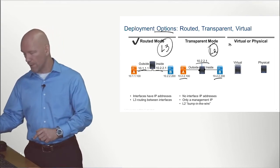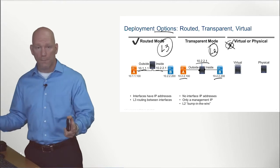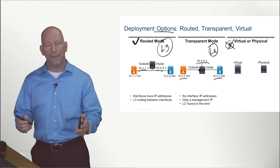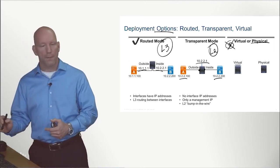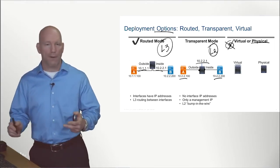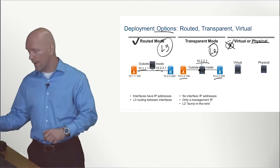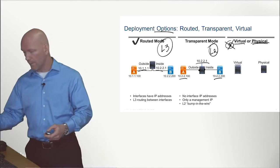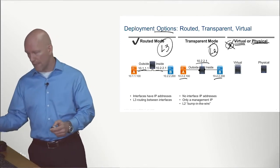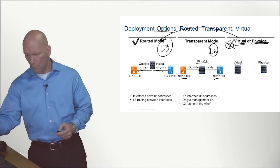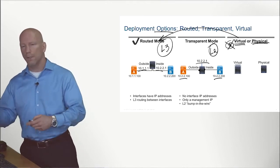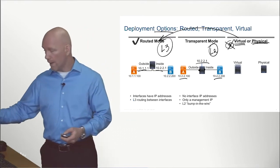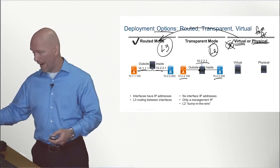I don't want you thinking there's a third deployment option here. We're simply saying the appliance — your firewall or IPS appliance — can be a physical appliance, such as a Firepower 2100 series, or a virtual appliance such as an ASAv if you're in a virtualized data center. You have the ability to run routed mode or transparent mode in either physical or virtual form — what we refer to as the form factor of your appliance.